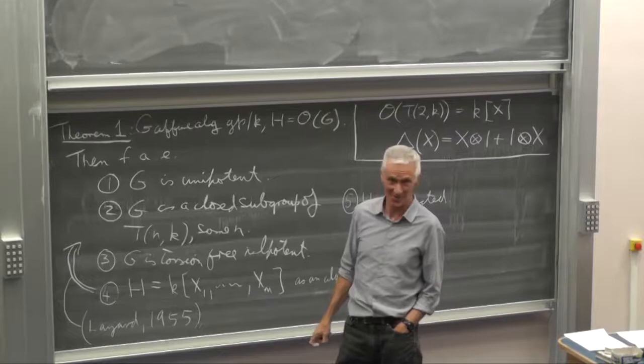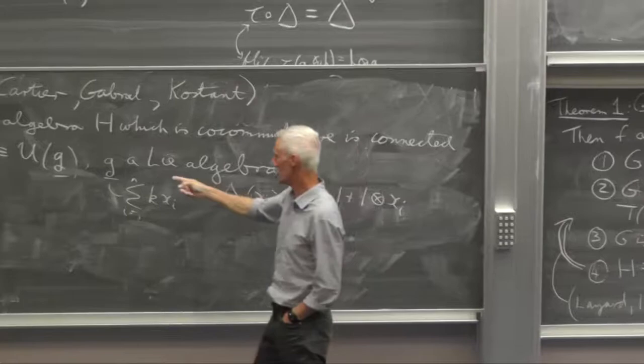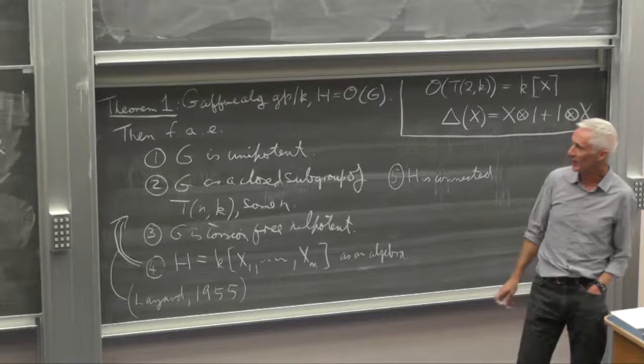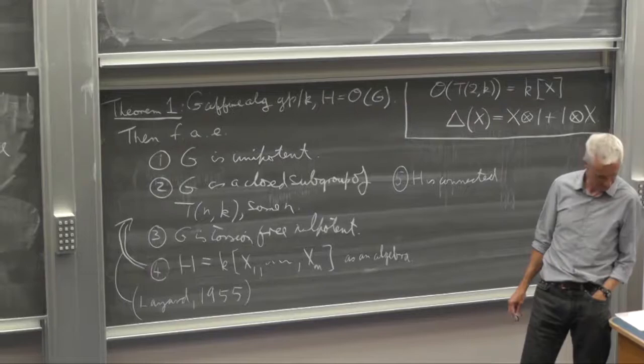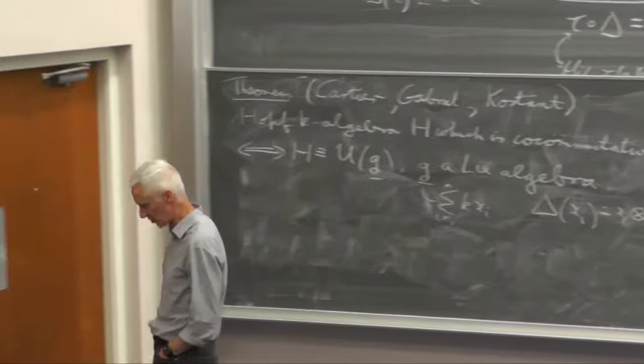The coproduct for enveloping algebras is really like this. For the one-dimensional Lie algebra, that's an example. And they all look like that. So if G has basis x1 to xn, let's say finite dimensional. The theorem is valid without finite dimensional, let's just say finite dimensional for convenience. Then you have the same formula: delta of xi equals xi tensor 1 plus 1 tensor xi for these xi's. So you can see they're all co-commutative. So these are the co-commutative Hopf algebras and they're all connected. And the names here are Milnor, Moore, and Cartier. This is from the early 1970s, basically this theorem.